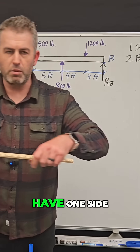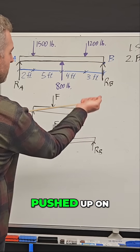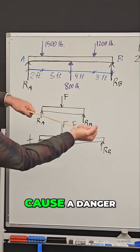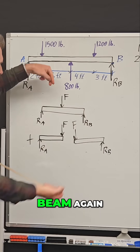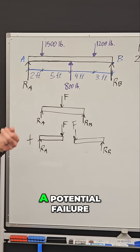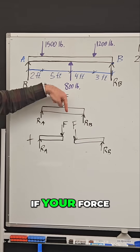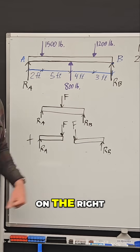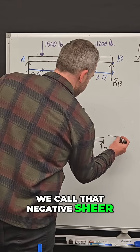Basically you have one side of the beam being pushed up on and the other side being pushed down on, and it's going to cause a danger of puncturing through this beam — that's a potential failure. But this time if your force is down on the left and up on the right, we call that negative shear.